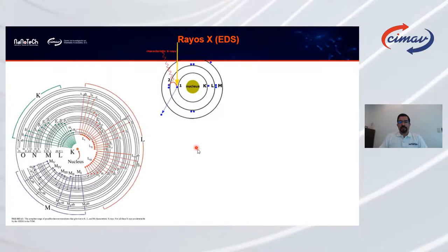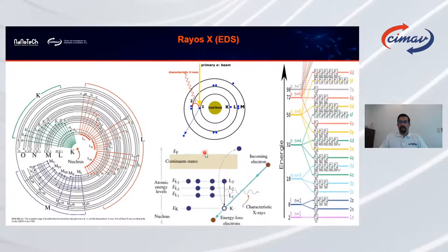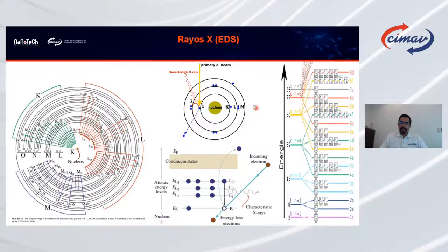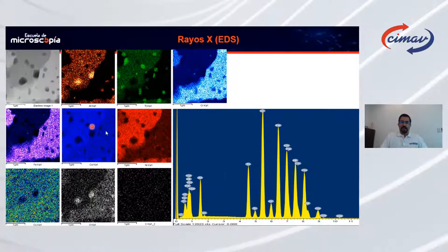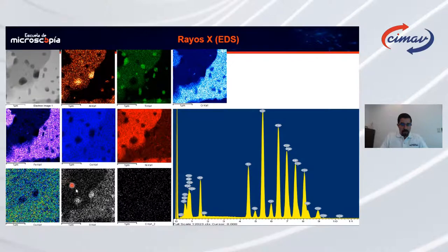Podemos ver toda la parte de difracción o estructura cristalina del material: si es policristal, monocristal o amorfo, cómo crecen los átomos, cuáles son las interfaces. También podemos ver espectroscopía de rayos X EDS y EELS, donde obtenemos información cualitativa y cuantitativa: qué elementos tiene la muestra, cuánto tiene de cada uno y dónde están. En un mapa elemental podemos ubicar el aluminio, titanio, cromo, hierro, cobalto, níquel, cobre, oxígeno y carbono.